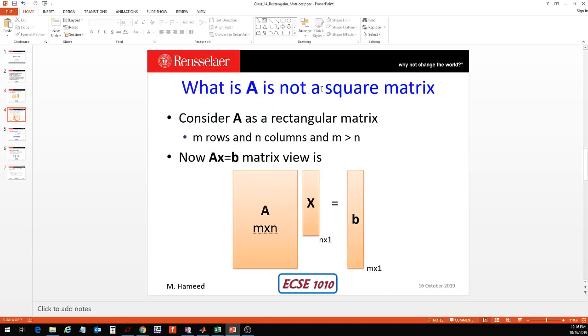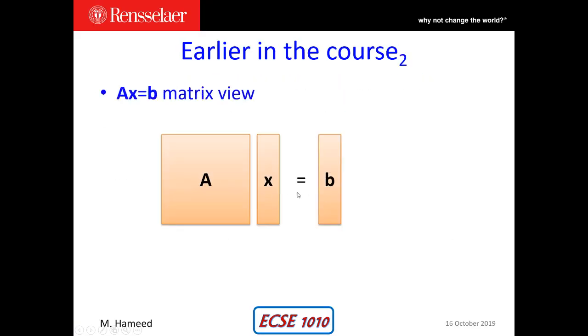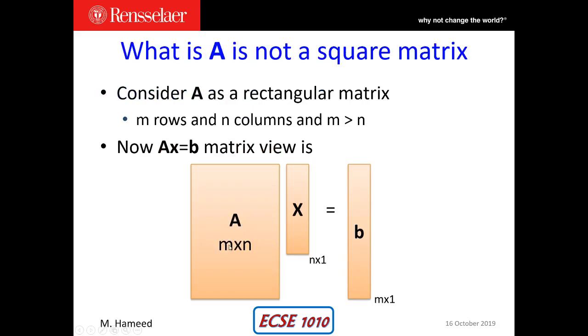What if A is not a square matrix? Now we would consider A as a rectangular matrix in which we have our number of rows different from the number of columns. We're considering the number of rows to be small m and the number of columns to be small n, so the number of rows is greater than the number of columns.